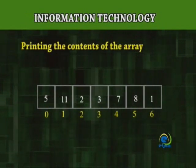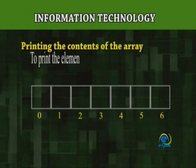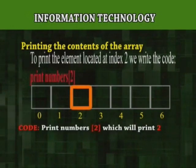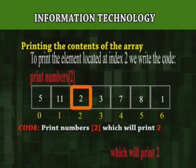Printing the contents of the array. To print the element located at index 2, we write the code print numbers at index 2, which will print 2.